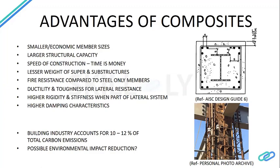Gravity members include columns, beams, and the loads from slabs — tiles and superimposed dead loads. By using composite action with a steel beam below and a composite deck above, we reduce the overall self-weight of the gravity members. This reduced load trickles down to the columns, and ultimately to the foundation. So we get a reduction in loads, which causes a reduction in member sizes, which causes a reduction in cost.